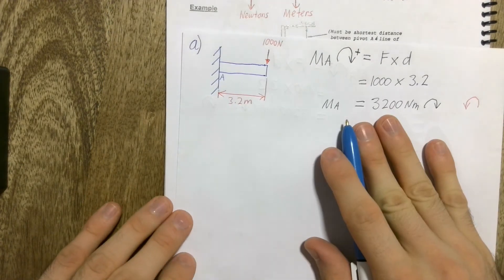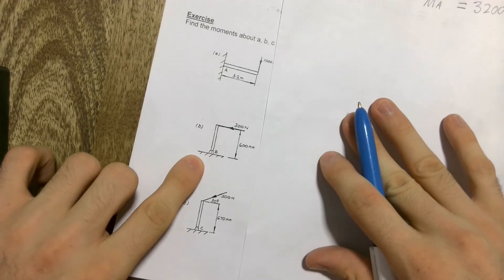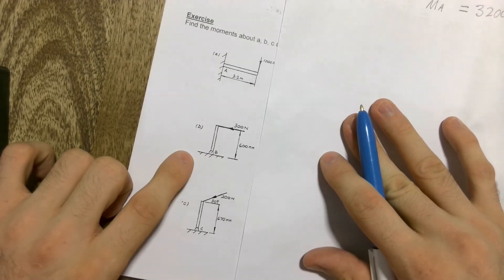Now gents, you've had a crack at number A. What I want you to do now is have a little go at B. B is very similar to A.